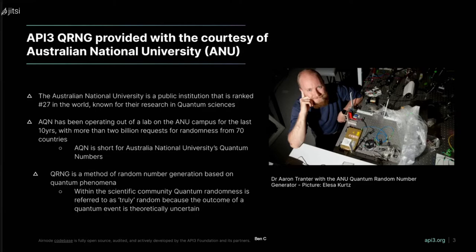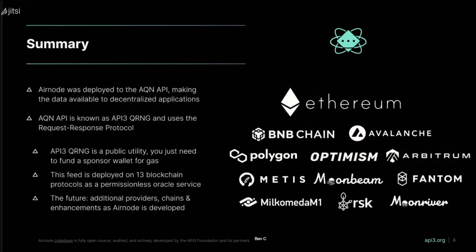The output is measured and served through the API. Within the scientific community, quantumly generated randomness is referred to as true randomness, because the outcome of the quantum event is fundamentally uncertain. Aaron is from the ANU Quantum Randomness team — they've been fantastic to work with and are the folks who deployed their Airnode.